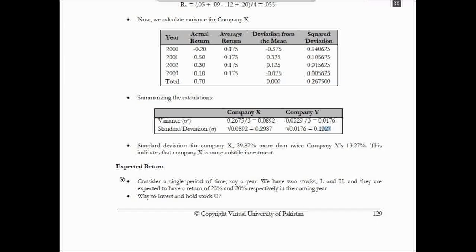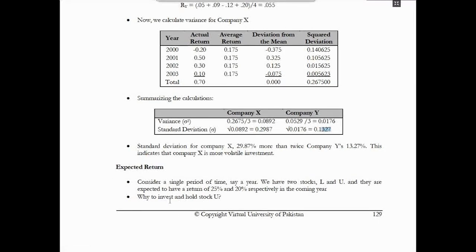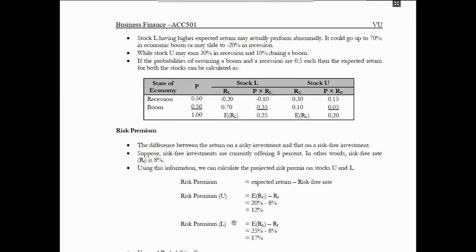L and U are investments where expected return is 25% and 20%. What is the investment we should hold in U? Now this question is that L's expected return goes up to 70% in an economic boom and slides to 30% in a recession. Above government solvency, you earn about 6%.